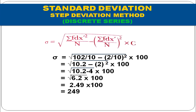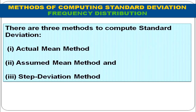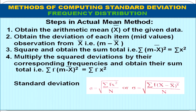Now we are going to calculate standard deviation in case of frequency distribution. Again, there are three methods: actual mean method, assumed mean method, and step deviation method. For the actual mean method, the steps remain the same but the computation changes — we first convert class intervals into mid values, then take deviations from mean, square them, multiply by frequencies to get Σfx², and apply the formula σ = √(Σfx² / n). The formula remains the same as for discrete series.